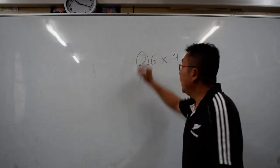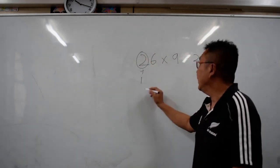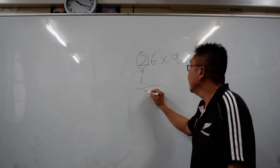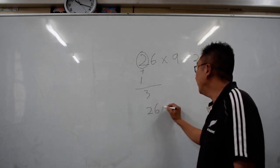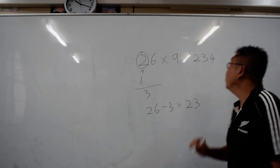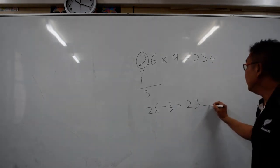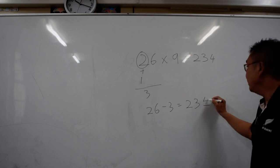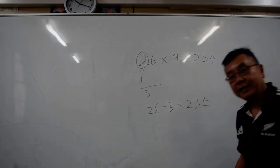So 26 minus 3 is going to be 23. And to make it 9, the last number, this 3 digit must add up to 9 and that number have to be 4.